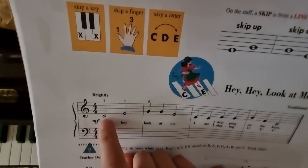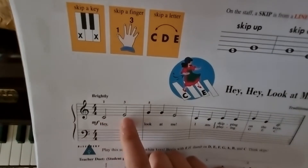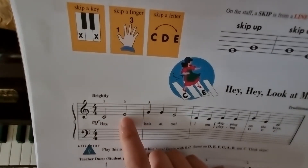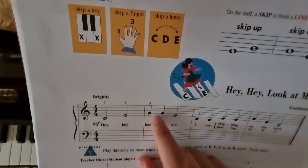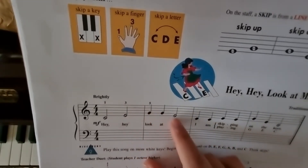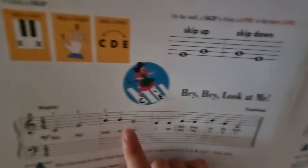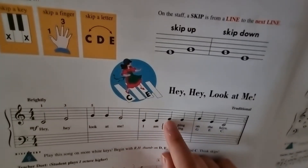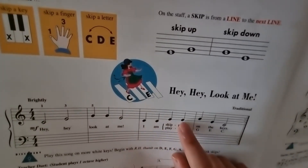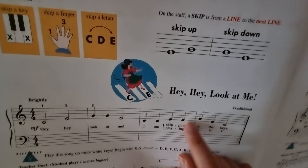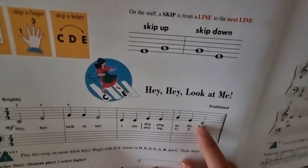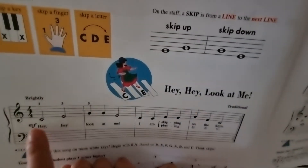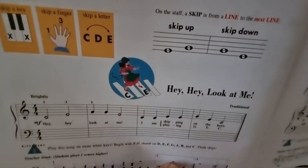In this song, we have a line note C going to another line note — that's a skip. Line note to the next line note, skip. Line note to a line note, skip. Line note to a line note, skip. So almost every single note in this song is a skip.